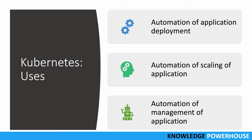Second is scaling. Once you've automated deployment, if your service has high demand and you need more servers, Kubernetes can scale up - it can create more servers and deploy to them. Third is automation of management of applications, meaning if your application needs to be scaled down or some configuration needs to be changed across all containers, Kubernetes can handle that.